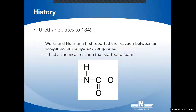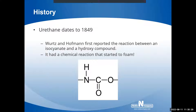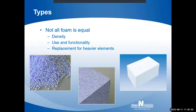Urethane foam goes back all the way to 1849. What happened was that Dr. Wurtz and Hoffman put together two products — the isocyanate and hydroxy compound. When they put these two together, there was a reaction between the two, and that's where foam originated. It started to come about and formulate. From 1849 on, they started to toy around with foam. Foam is a general term because there are all different types of foam and all different kinds of uses within the industry.